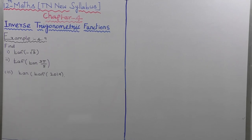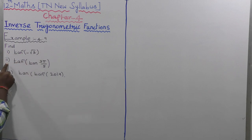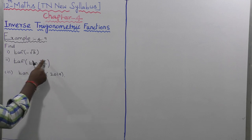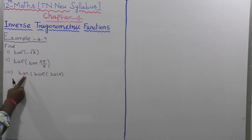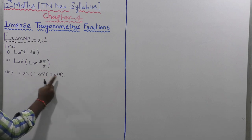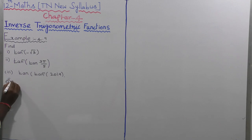Example 4.9. Find: first subdivision, tan inverse of minus root 3; second subdivision, tan inverse of tan of 3π/5; third subdivision, tan of tan inverse of 2019.